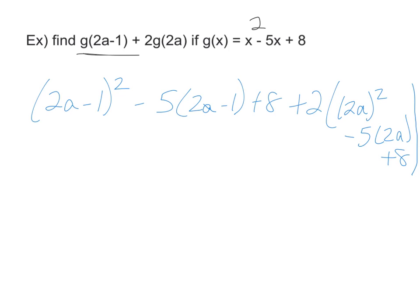Alright, so from there again I'll FOIL this 2a minus 1 squared out. If I FOIL that, I'm going to get 4a squared minus 2a times 2 would be minus 4a plus 1. Distribute minus, oops, that should be 10a plus 5 plus 8.